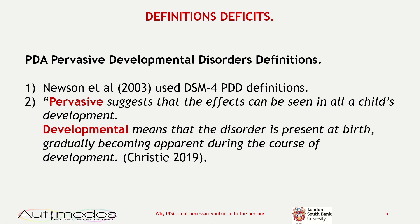Elizabeth Newson used the definitions for pervasive developmental disorder from the DSM-IV. Phil Christie — if you believe what some people claim, meant to be the leading expert on PDA as a form of autism — has been using these definitions for 'pervasive' and 'developmental.' He would say that 'pervasive' suggests the effects can be seen in all of a child's development, and 'developmental' means the disorder is present at birth and becomes apparent during the course of development. There are problems with assuming these definitions are valid for PDA.